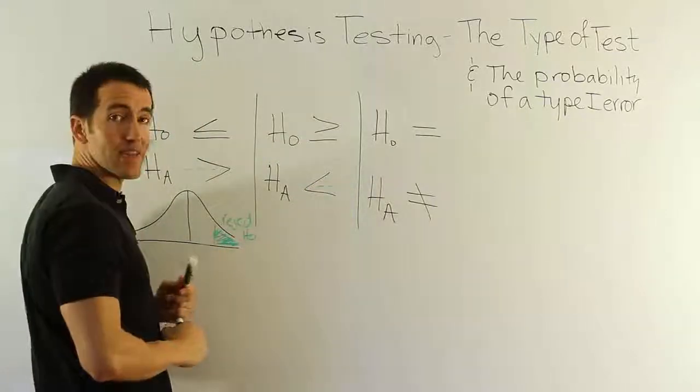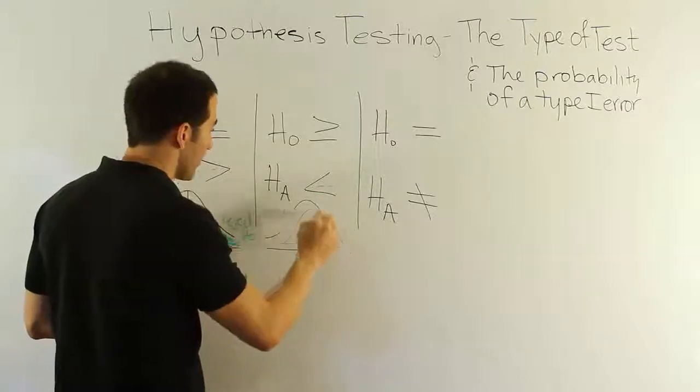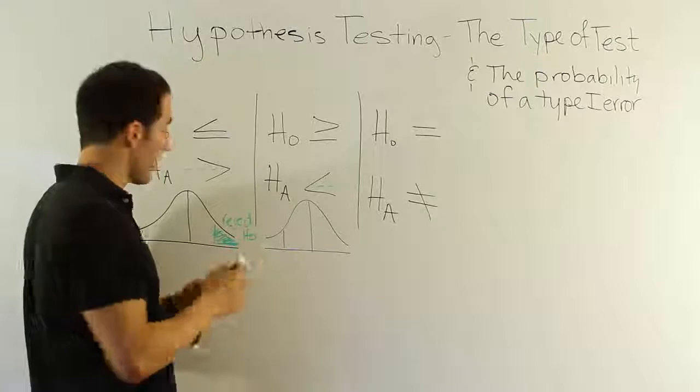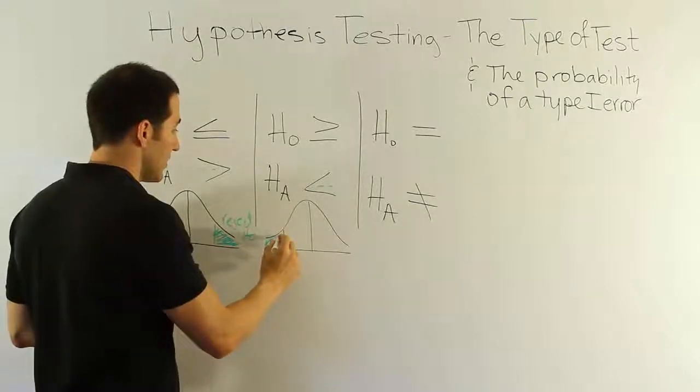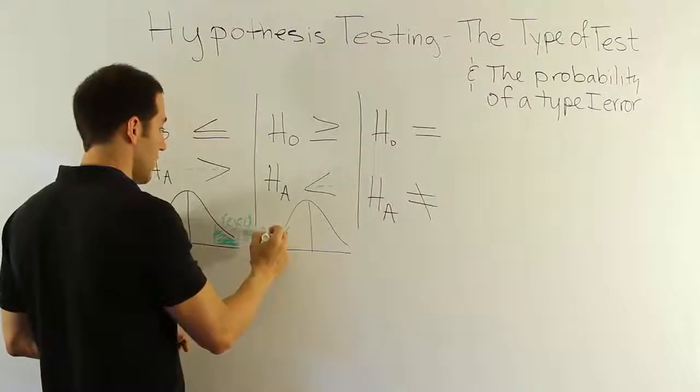So in this scenario we have a left-tailed test. So when you draw your little bell curve, you end up with a left-tailed procedure. So you will reject H0 when the sample mean is too low. So reject H0 in that scenario.